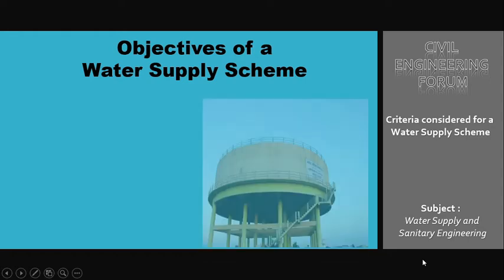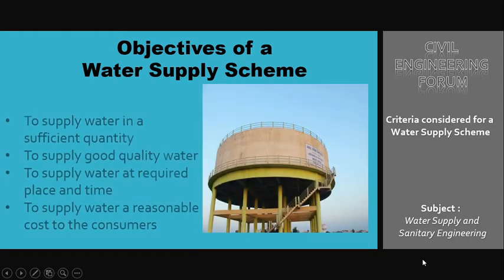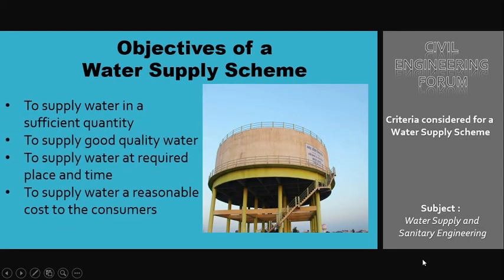By understanding the objectives, we will understand why we are designing this water supply scheme. Our first objective is to supply water in a sufficient quantity, and then to supply good quality of water. Quality and quantity of water are very important for the livelihood of any area.